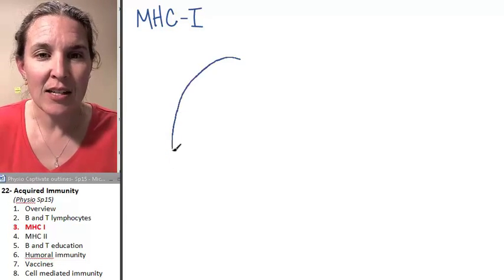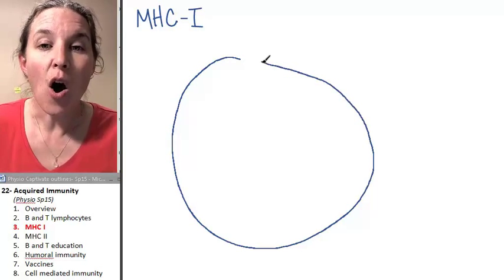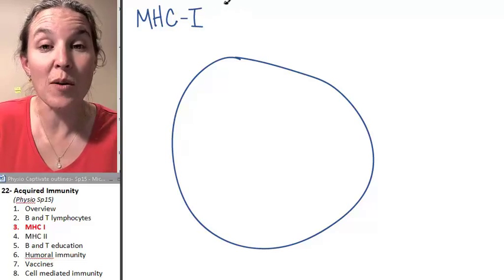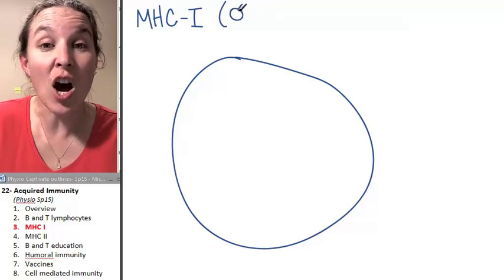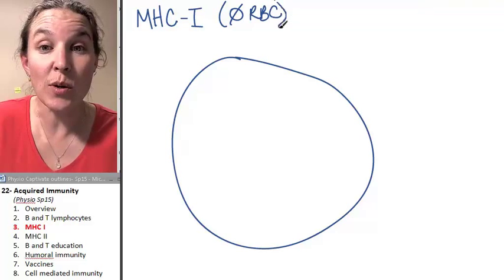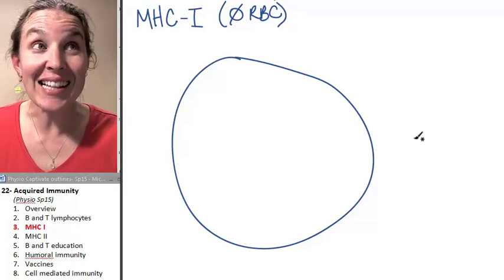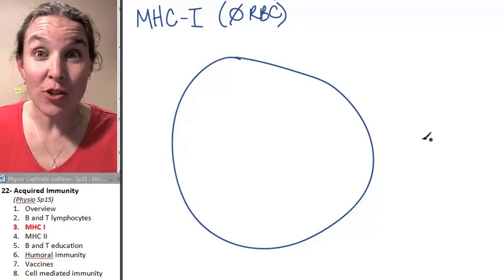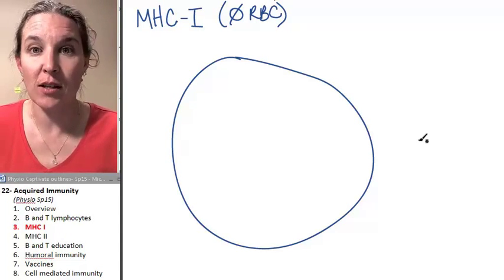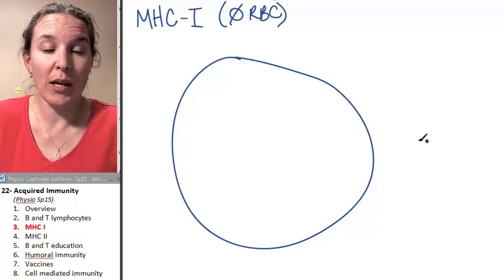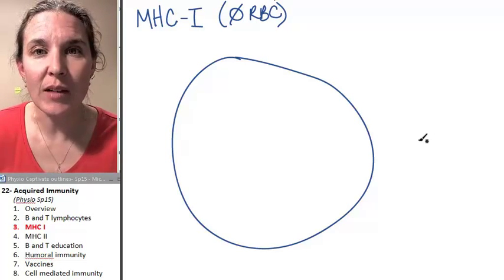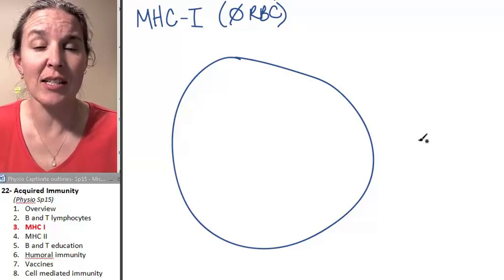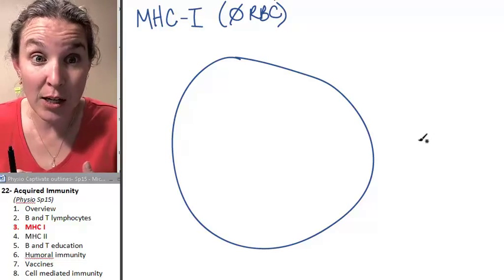I want you to visualize this: all cells have MHC-1 platforms, except red blood cells. That's the reason why you can do blood transfusions easily. I can donate my blood and 40% of the United States population can accept my transplant.